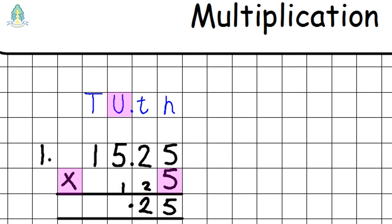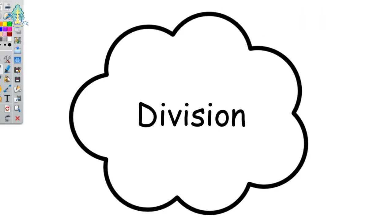Five multiplied by five is twenty-five, add our one is twenty-six. Six goes into the units column and we carry our two over. Our last calculation is five multiplied by one, which is five; add our two is seven, giving us a final answer of seventy-six point two five.